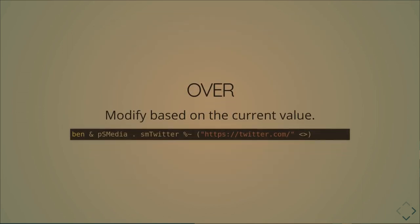Another basic tool for lensing is a thing called `over`, which is the `%~` operator. Instead of setting the value to a specific thing, this takes the old string we had and applies a function to it — for example, concatenating a URL to the front of it. It's an example of taking the previous value and making a new value out of it.